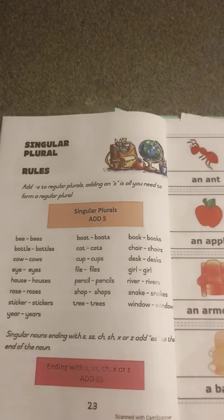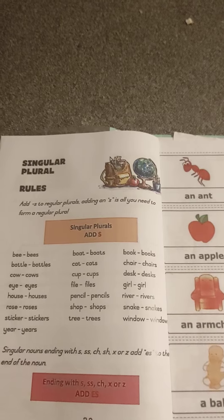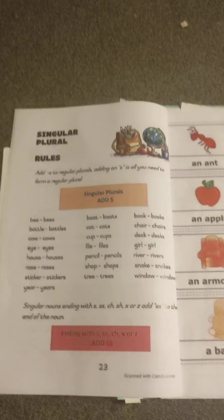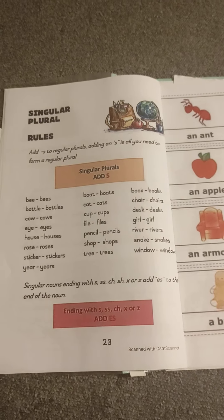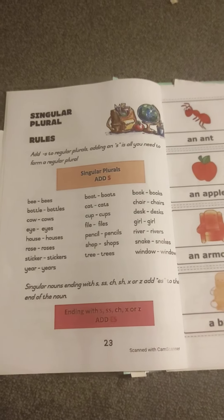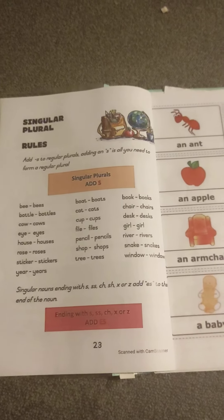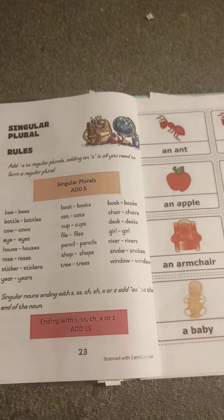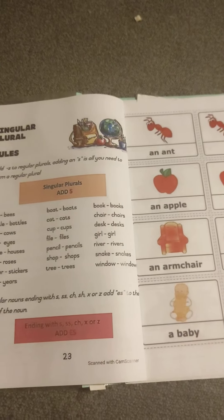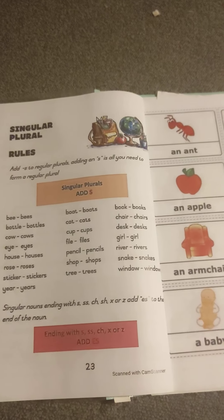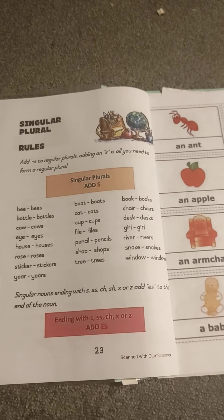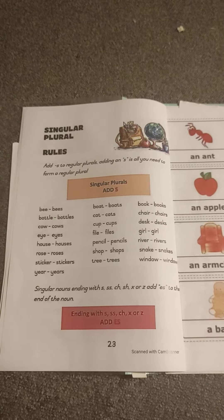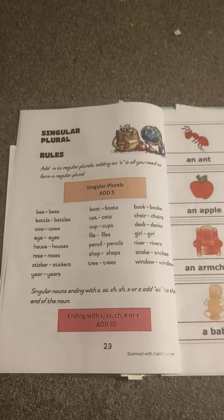To form a regular plural, simply add S to the end of the noun. For example: bottle, bottles; cow, cows; eye, eyes; house, houses; rose, roses; sticker, stickers; year, years; boat, boats; coat, coats; cup, cups; file, files; pencil, pencils; tree, trees; book, books; chair, chairs; desk, desks; river, rivers; snake, snakes; window, windows.